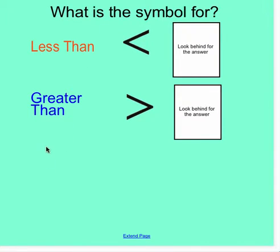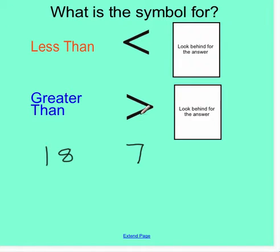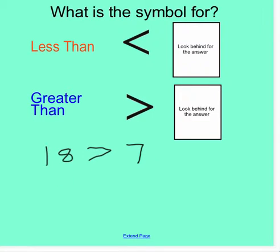Let me give you an example. Let's say we have the number 18 and we have the number 7. I want to tell someone that 18 is greater than 7. Instead of writing it all out in words I can use the symbol. This is the greater than symbol, so I can go ahead and put that in between the two numbers. Now I can read the problem as 18 is greater than 7. If I do another example I could say 3 is less than — if I switch my symbol around — less than 11.